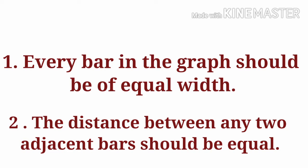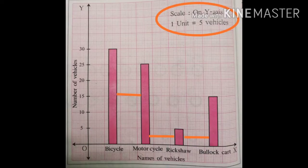First, every bar in the graph should be of equal width. Second, the distance between any two adjacent bars should be equal. Each bar in the graph has the same width, and the distance between bars is also equal.